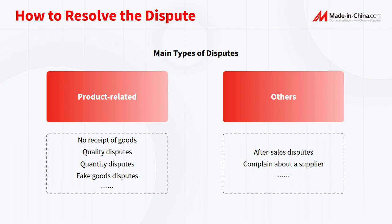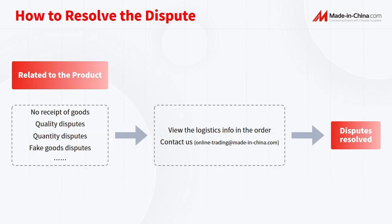The other type is related to other situations, such as after-sales disputes, complaints about a supplier, and so on. Let's see how disputes are handled in different situations. Related to the product: no receipt of goods.